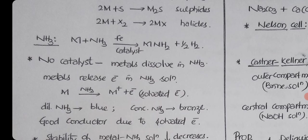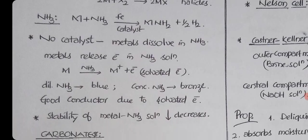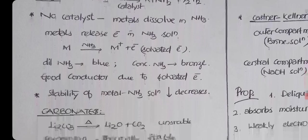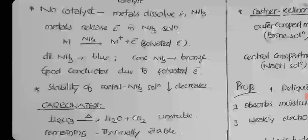All these metals dissolve in ammonia and release electrons. These electrons are called solvated electrons. Due to solvated electrons, the solution is blue in color. The solution is a good conductor. As concentration increases, blue color changes slowly into bronze color. Stability of metal in ammonia solution decreases down the group.